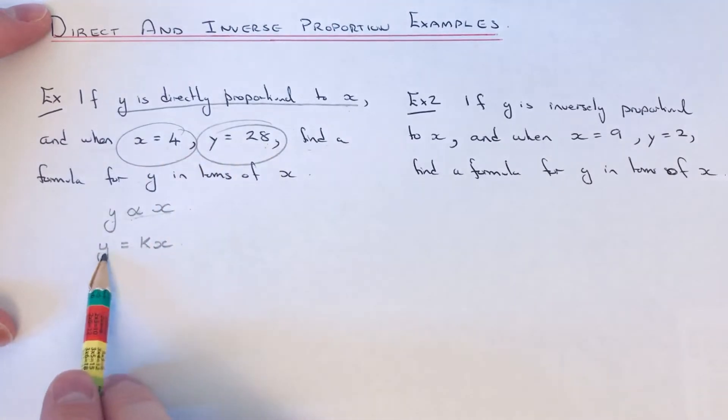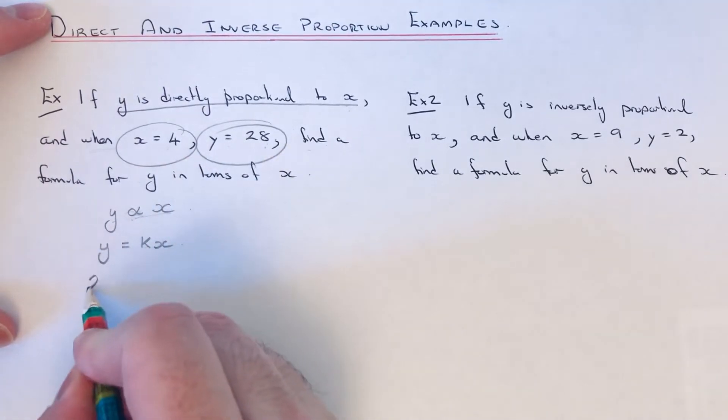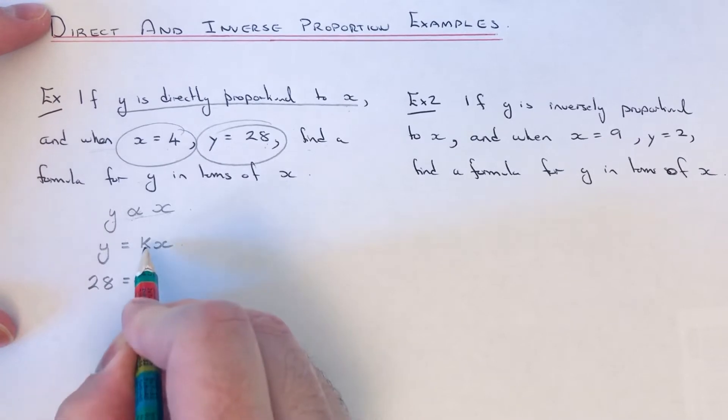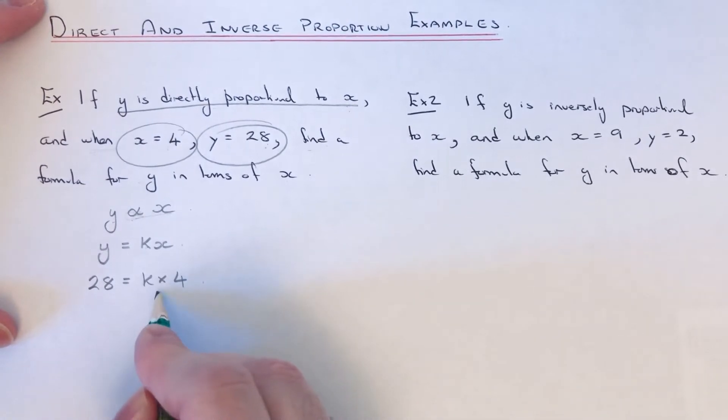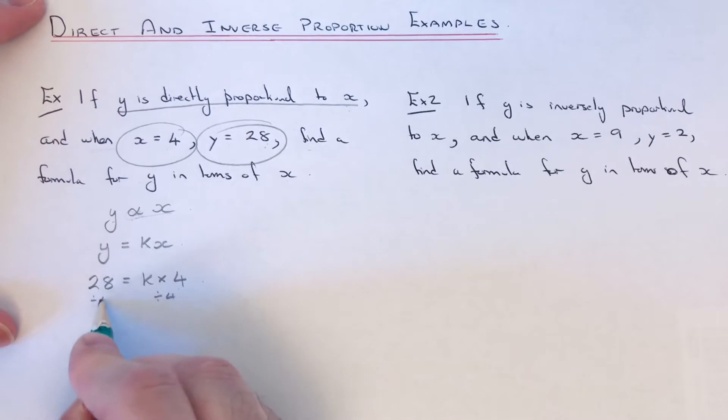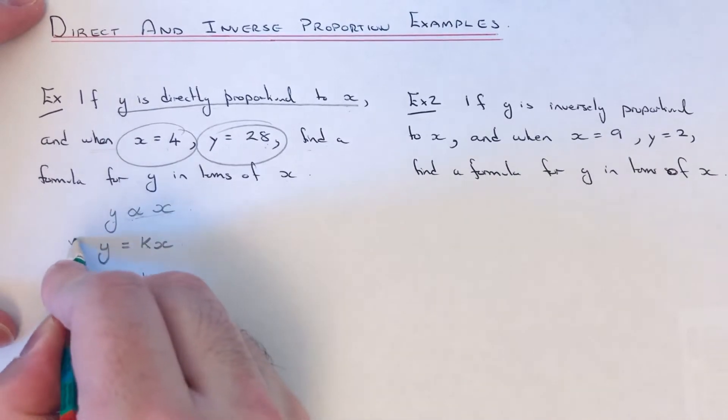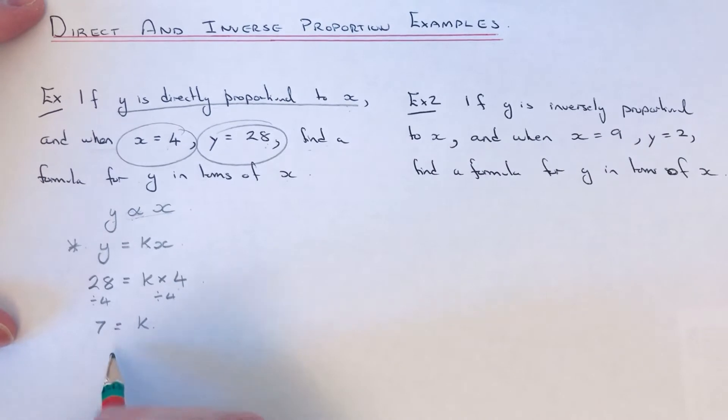So if we sub these carefully into our formula, y is 28, so if we put that first, and then it's k times by 4. So we need to find what that k is. If we divide by 4 on both sides to get rid of the times 4, 28 divided by 4 is 7. So 7 is equal to k. So we just need to go back to that line and fill that 7 in. So we get y equals 7x.